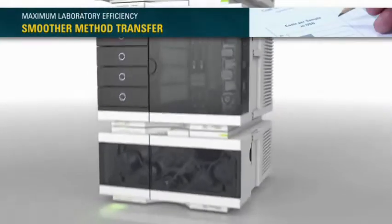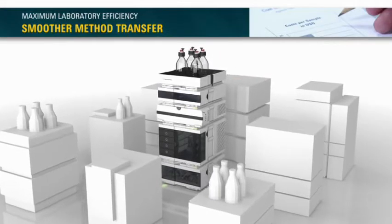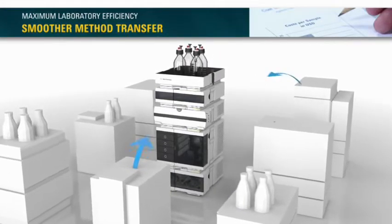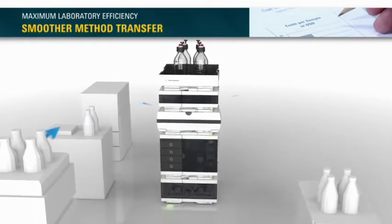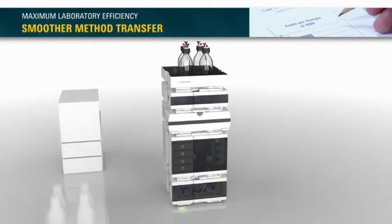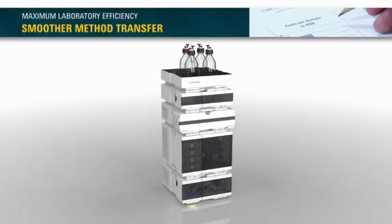Intelligent system emulation technology executes any HPLC or UHPLC method while delivering the same chromatographic results. That means smoother method transfer between any instrument, regardless of brand. You can phase out your legacy LC systems while keeping your valuable methods.